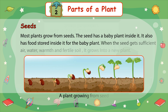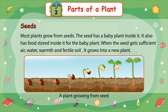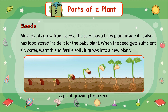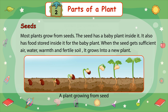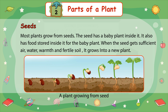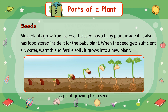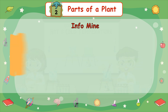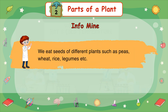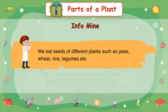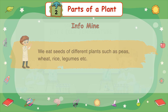Most plants grow from seeds. The seed has a baby plant inside it. It also has food stored inside it for the baby plant. When the seed gets sufficient air, water, warmth, and fertile soil, it grows into a new plant. We eat seeds of different plants, such as peas, wheat, rice, legumes, etc.